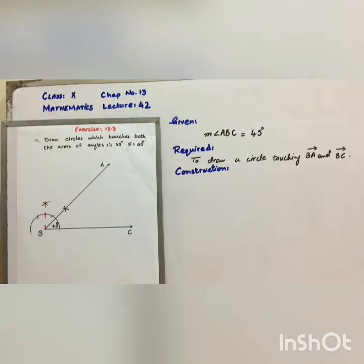draw circles which touches both the arms of angle of 45 degree and 60 degree. Here I have drawn angle of 45 degree and named the angle as ABC.